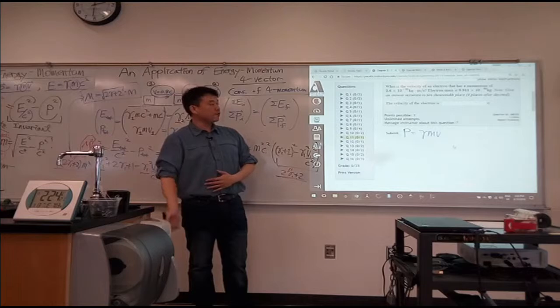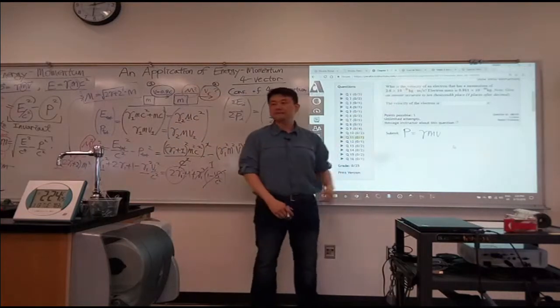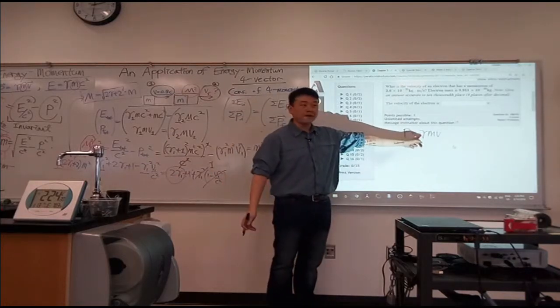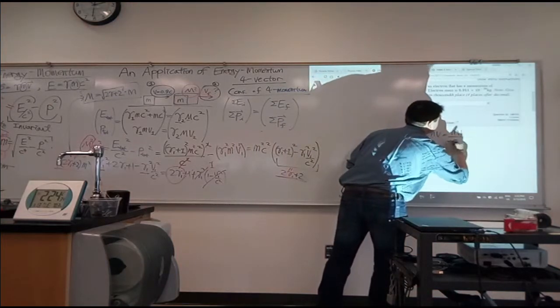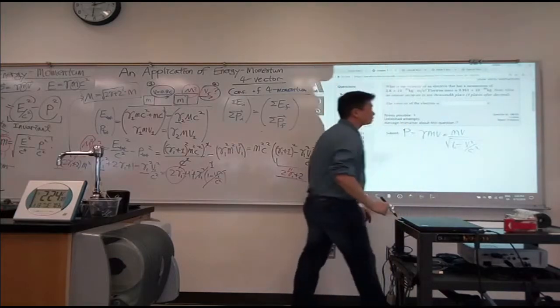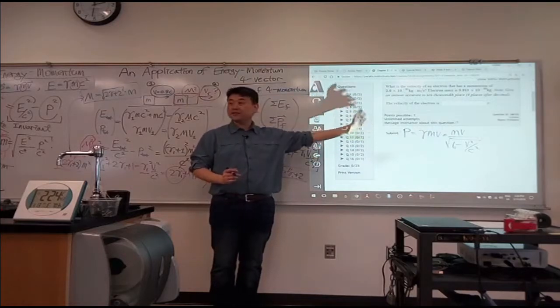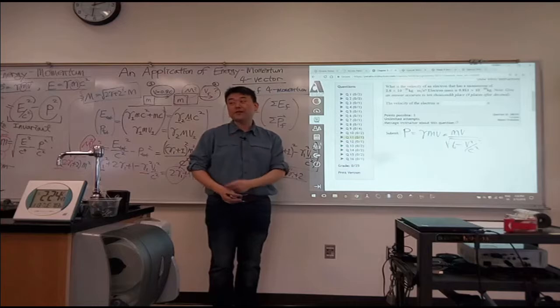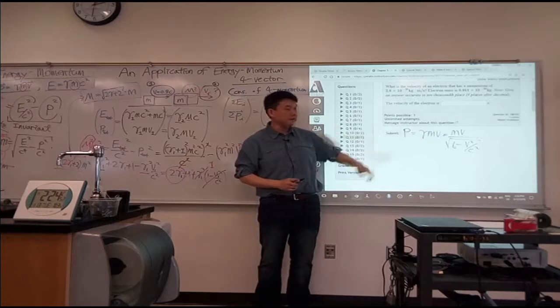And the wrong thing to do here is to say, all right, I'm looking for velocity, so I want to solve this for velocity. So you put in gamma in terms of v. You write mv over square root of one minus v squared over c squared. And then you go through a bunch of more algebra to solve it for v. You can totally do that, you'll get the correct answer. But there is a way to do it even more quickly. You can save yourself a lot of algebra.